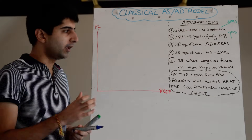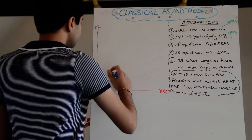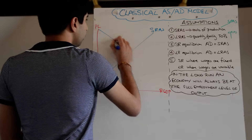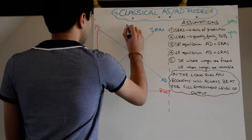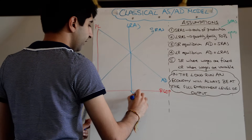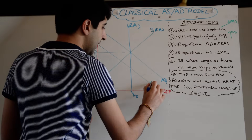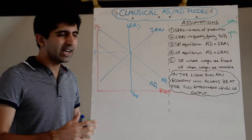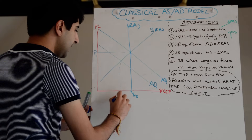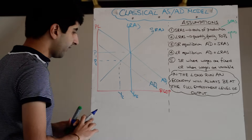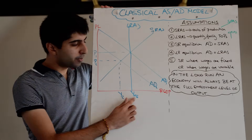Let's take two examples: an economy in recession and an economy overheating in a boom, to see how the classical model predicts self-healing. Starting with a short run equilibrium where AD cuts SRAS at the full employment level of output — with LRAS going through that equilibrium at price level P1. If aggregate demand shifts left from AD1 to AD2 — say due to a sudden fall in investment — the new short run equilibrium will be at lower output and a lower price level.